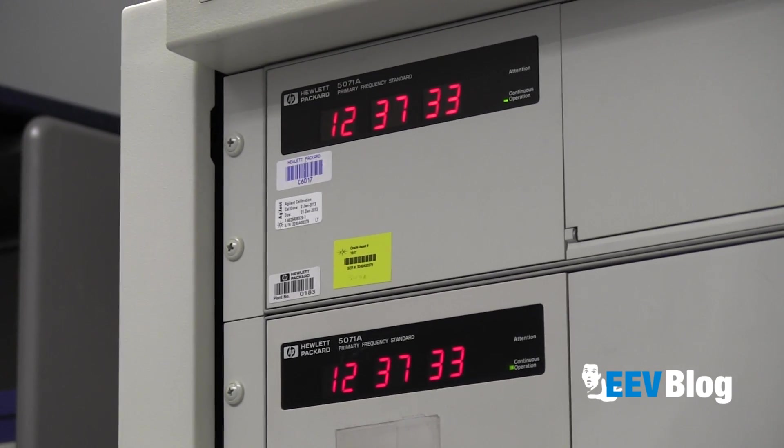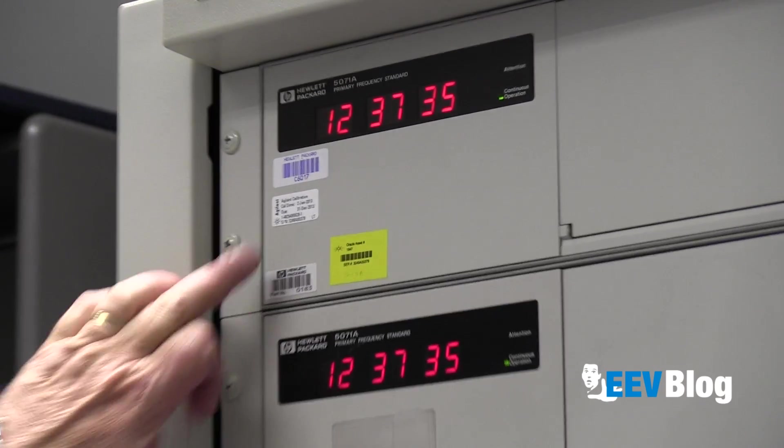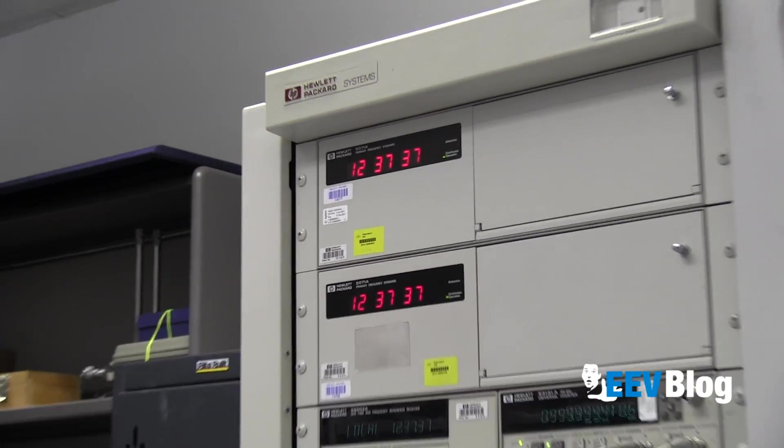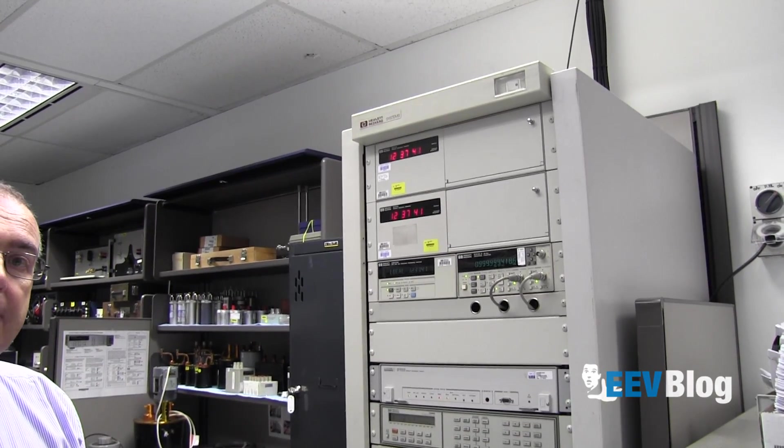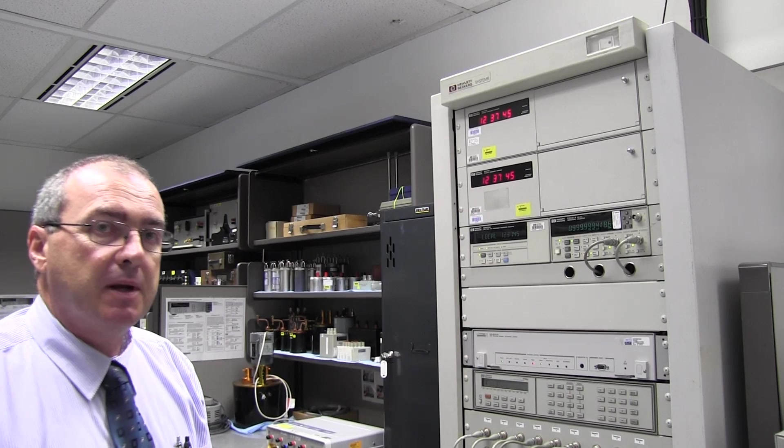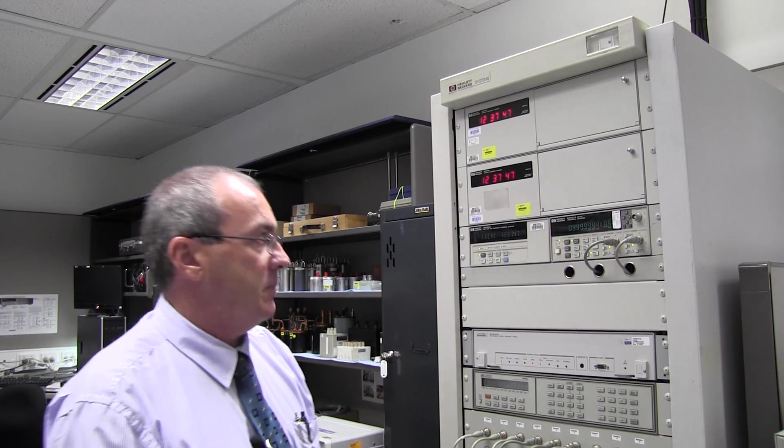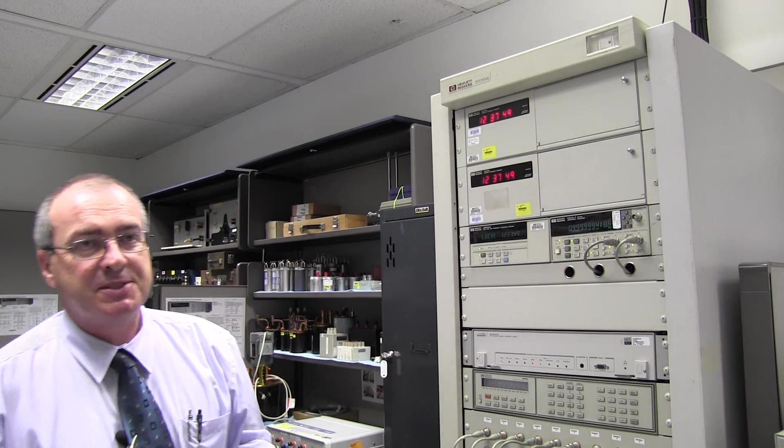Plant number 183 is our primary standard here, and this one is a cross reference for it. Is the primary one better? Has it got better performance? It's just an arbitrary choice which one you choose. It gives us a backup as well.